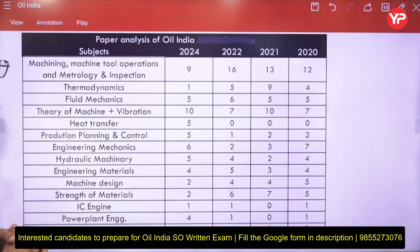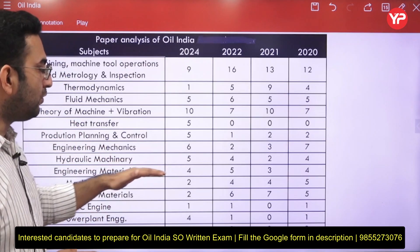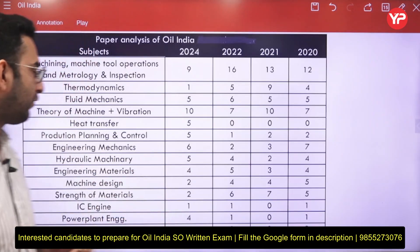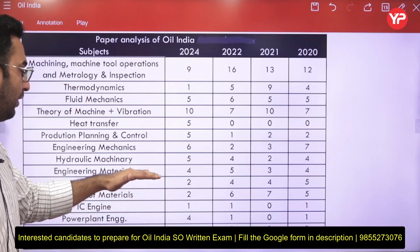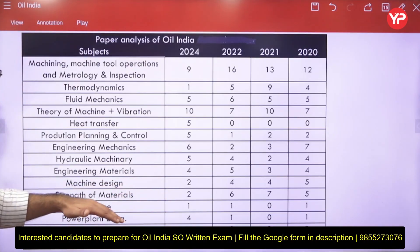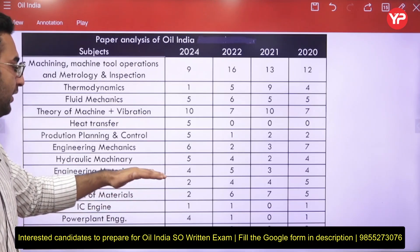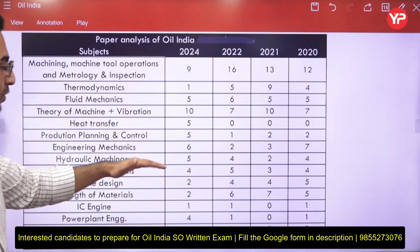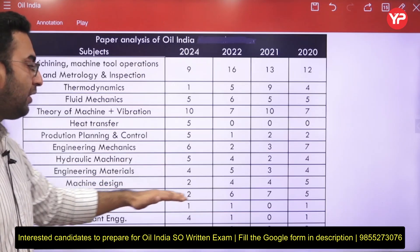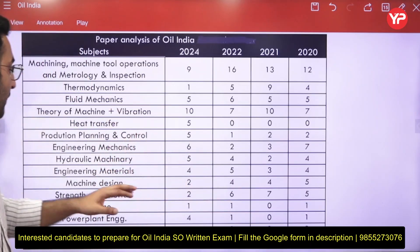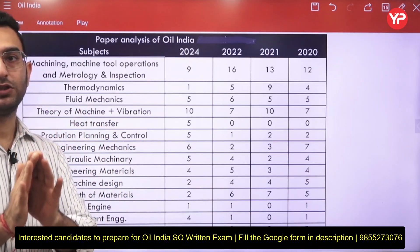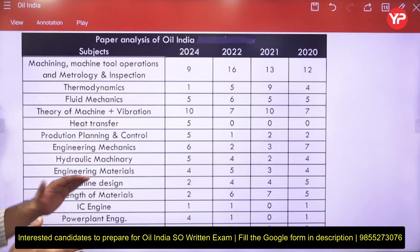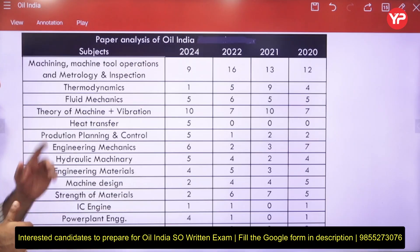Engineering materials carries a weightage of around five questions on average, covering material science. Strength of materials also carries around five to six questions. Machine design has approximately three to four questions, so the combined total from strength of materials and machine design is around eight questions. Engineering materials, strength of materials, and machine design are all important to cover.